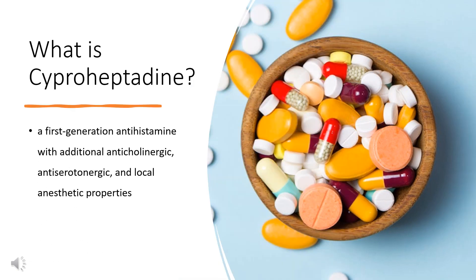Cyproheptadine, sold under the brand name Periactin among others, is a first-generation antihistamine with additional anticholinergic, antiserotonergic, and local anesthetic properties. It was patented in 1959 and came into medical use in 1961.